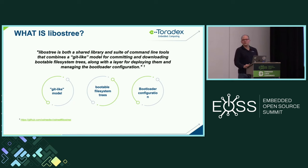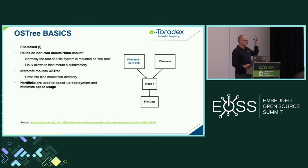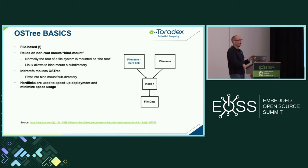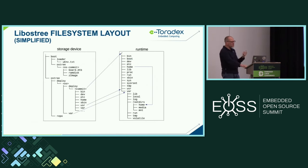The third main component is the bootloader configuration. Just like with dual AB, when you're dealing with an OSTree-based updater, the bootloader is responsible for selecting the appropriate commit to be booted at any given time. Everything in OSTree is file-based — it's not block-based. It does require that you are able to bind-mount the root file system. There is an initRAMFS that gets loaded and takes care of all the initialization, doing the appropriate pivot root into the proper bootable file system tree.